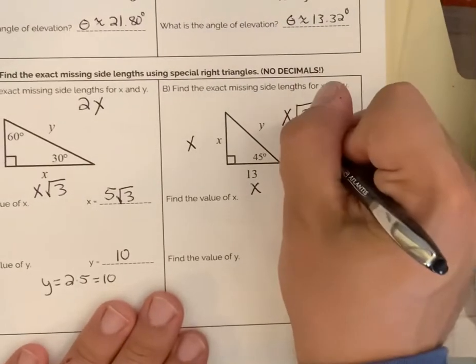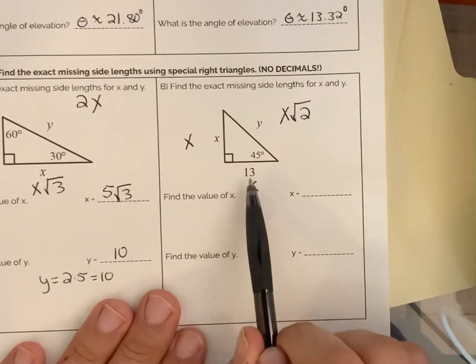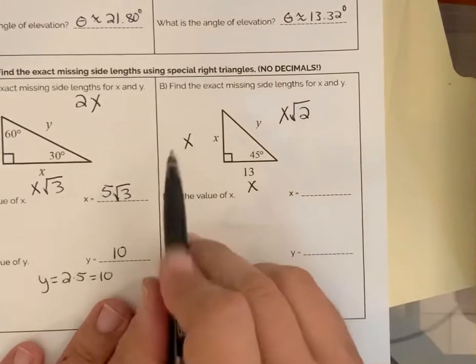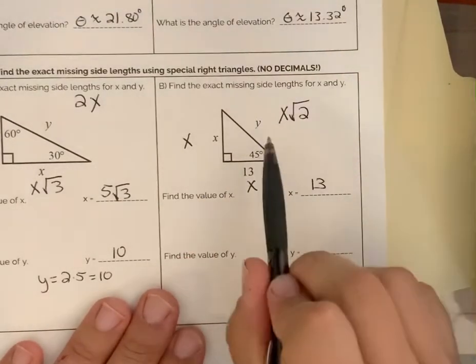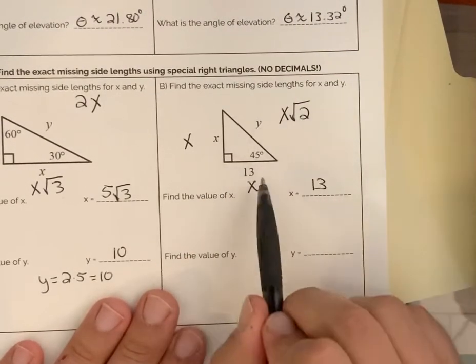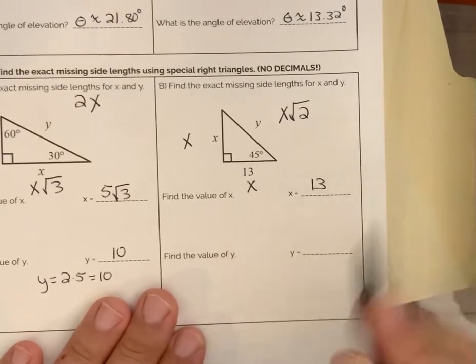We have to find the exact sides here. Well, one of the sides is 13. So one leg is 13. That means the other leg here, which is x, is 13. Now, to find the hypotenuse y, you just take 13, which is x, and replace it there, and it would be 13 times the square root of 2.